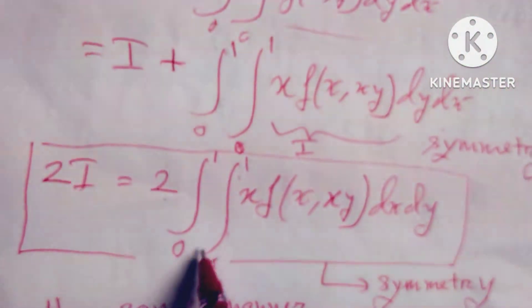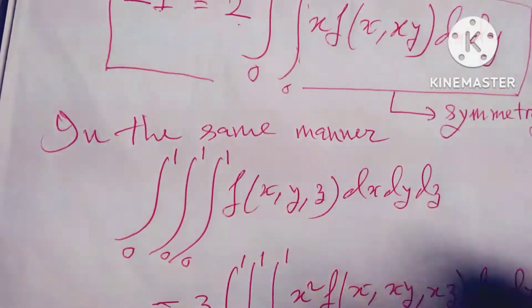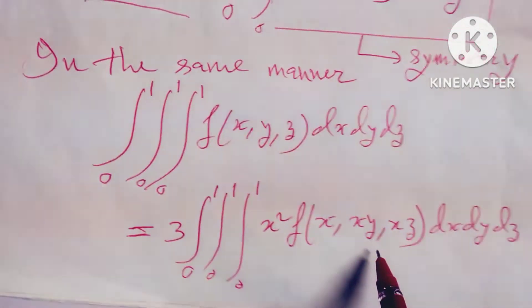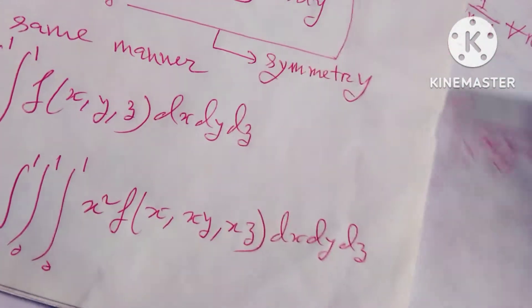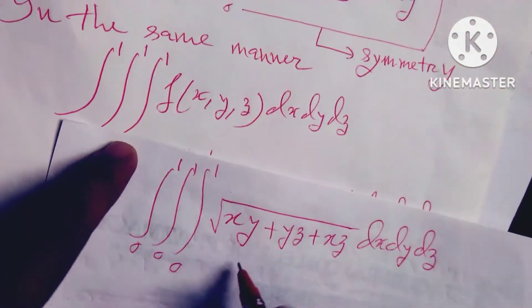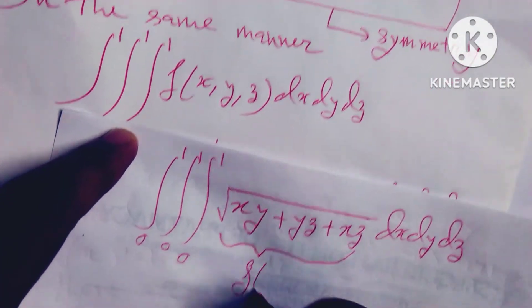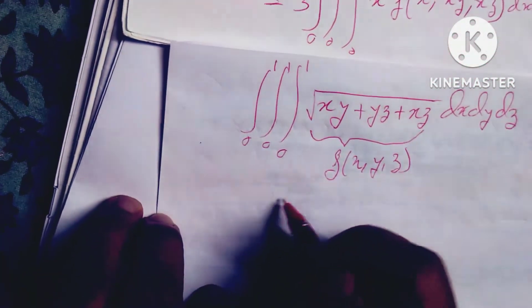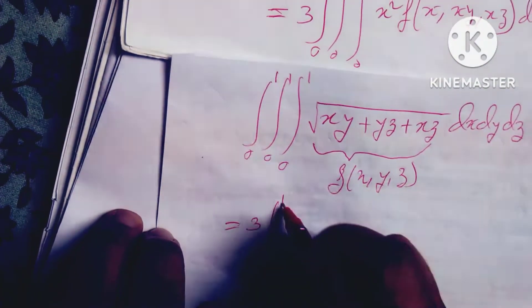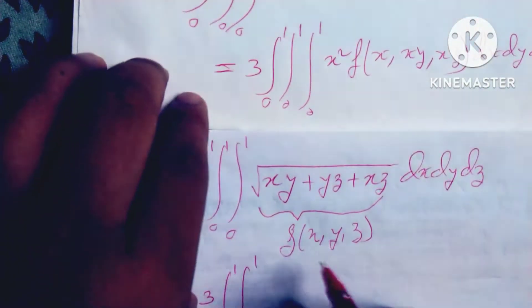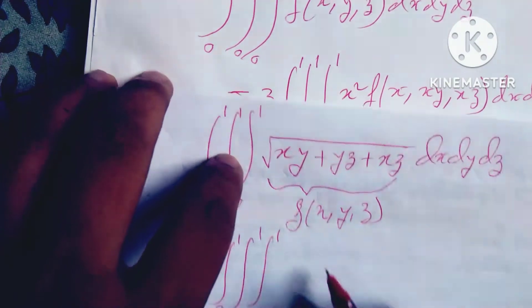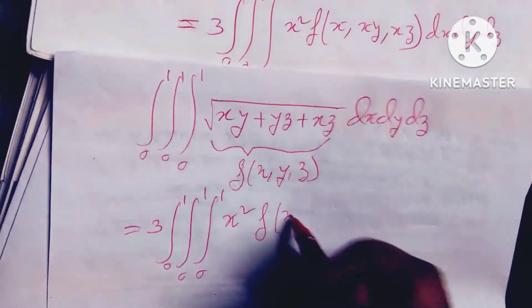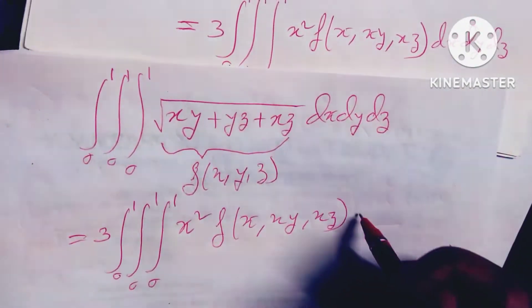In the same manner, for 0 to 1, 0 to 1, 0 to 1 of f(x, y, z) dx dy dz, we get 3 into the integral from 0 to 1, 0 to 1, 0 to 1 of x² f(x, y) dx dy dz. I apply this formula to the triple integration here. You see f(x, y, z) is this, and it can be written this way. So f equals 3 into 0 to 1, 0 to 1, 0 to 1 of x² into f(x, xy, xz) dx dy dz.